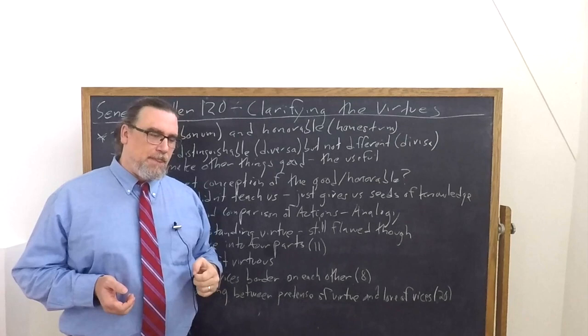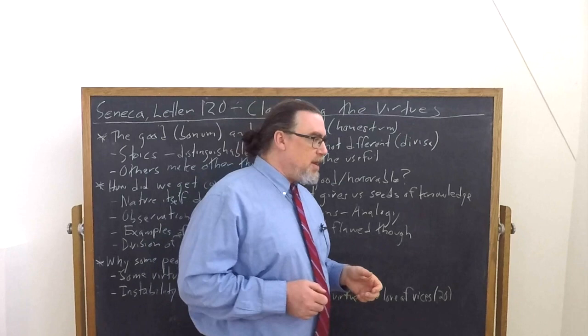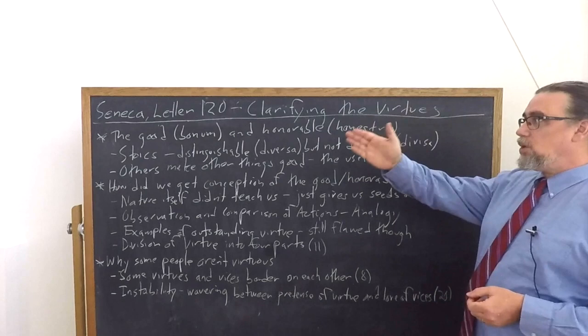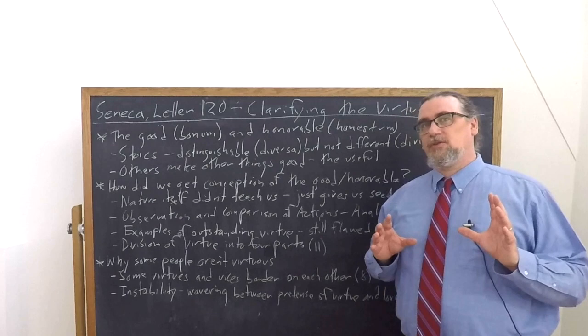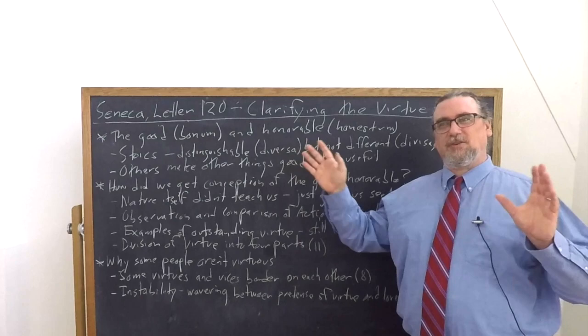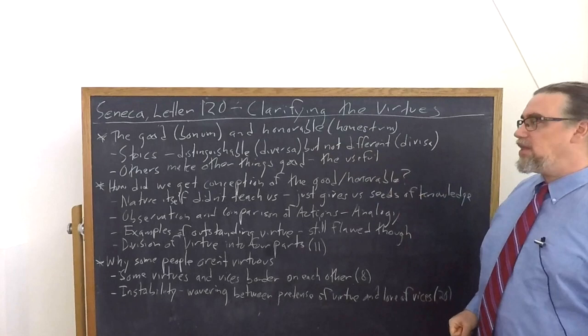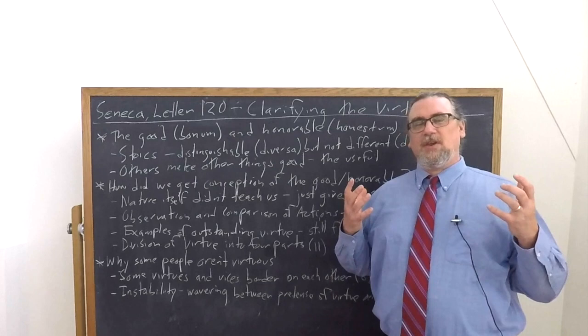The Stoics held that the good and the honorable are actually the same. One thing I do want to point out is the Stoics viewed them, according to Seneca, as distinguishable. We can actually talk about them as different modalities. So they are diversa in Latin, but they're not different. They're not separated from each other. They don't have an existence on their own where something would be good, but not honorable, or honorable, but not good. They are not divisa in Latin.